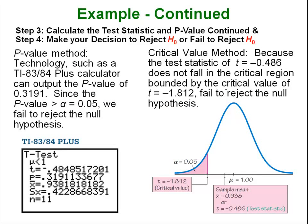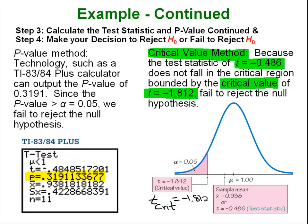Continuing on with step 3 we would calculate our p-value either using technology or tables. We can get our p-value this way or if we were going to do the critical value method instead of the p-value method we would take that t value that we got our test statistic from the previous slide. We would calculate the critical value which we would call t_crit. t_crit would equal negative 1.812. We would draw ourselves a picture. This is all our rejection region over here because the test statistic that we got of negative 0.486 would land here. It's not inside the rejection region and we would fail to reject.